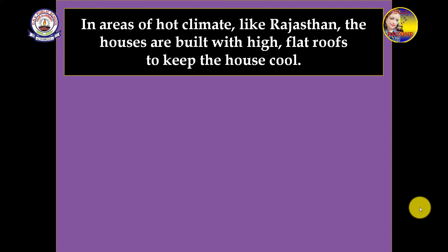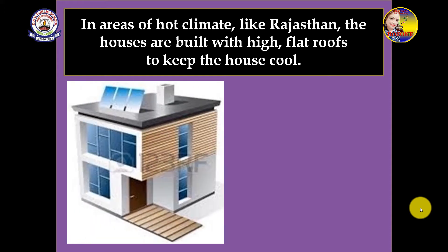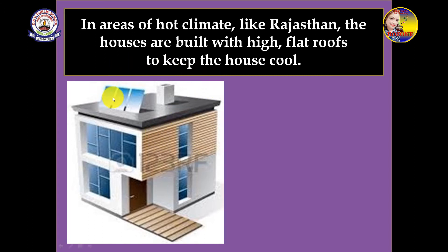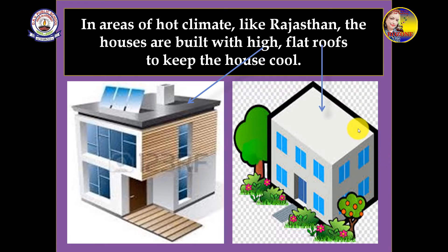In areas of hot climate like Rajasthan, houses are built with high flat roofs to keep the house cool. From the ground to the top the building is very high and the roofs are flat. The sunlight which falls on the roof does not easily reach the ground, keeping it cooler inside.